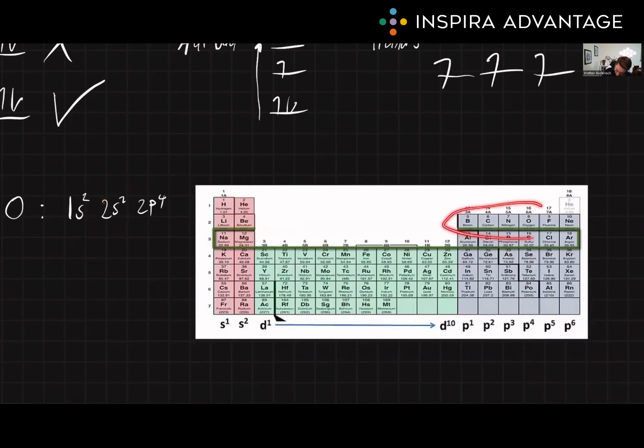So that thing in blue here is the p columns. So this would be p1, p2, p3, and p4. So we just write p4. And that's how we can figure out electron configuration, which is tested frequently on the MCAT.